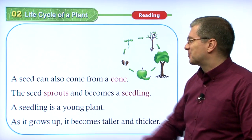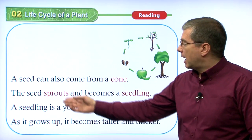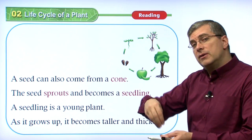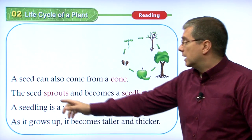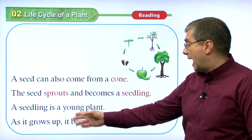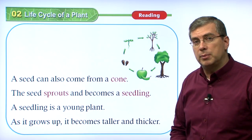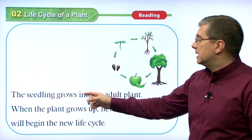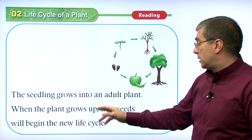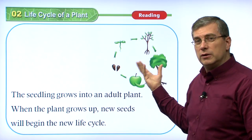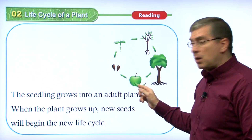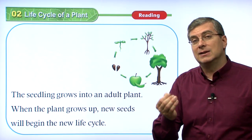The seed sprouts and becomes a seedling. We saw in the video that's a good example of how the seed sprouts and grows. A seedling is a young plant, a baby plant. As it grows up, it becomes taller and thicker — it is a growing plant. Then it becomes an adult plant. When the plant grows up, it generates new seeds. When the plant reaches its adult stage, it will produce fruit — whether an apple, a bean pod, or a pine cone — that contains seeds to begin the cycle again.